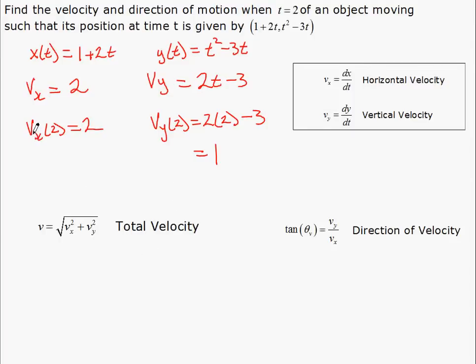So we have the x component of velocity and the y component. We put them together using this formula and that will give us the resultant velocity or total velocity.